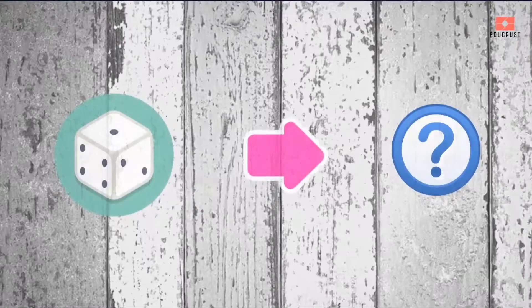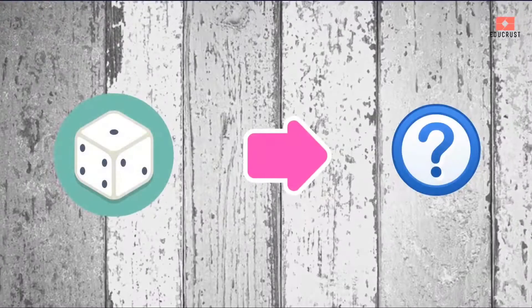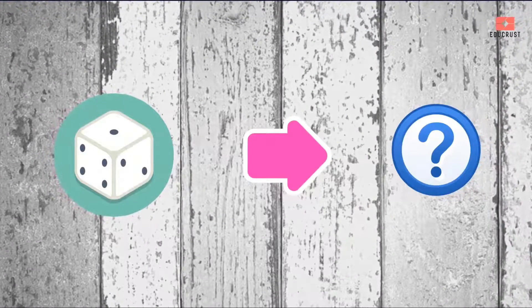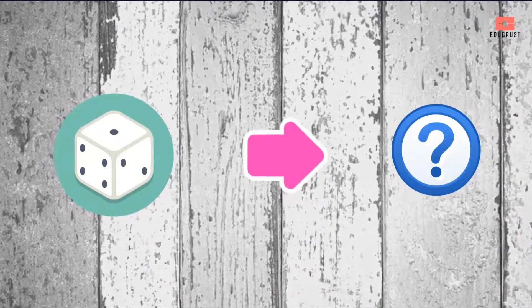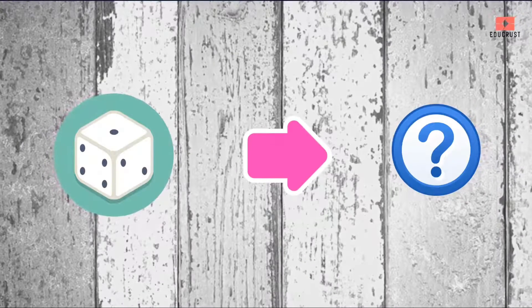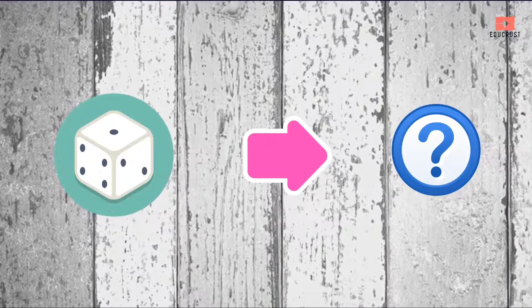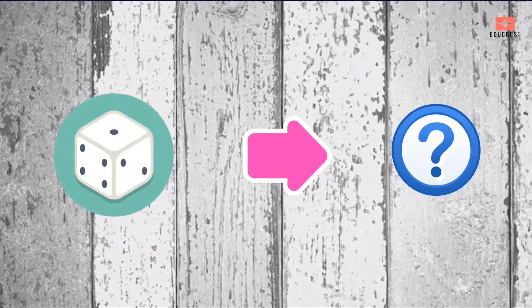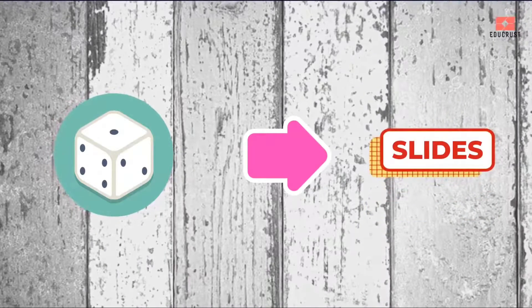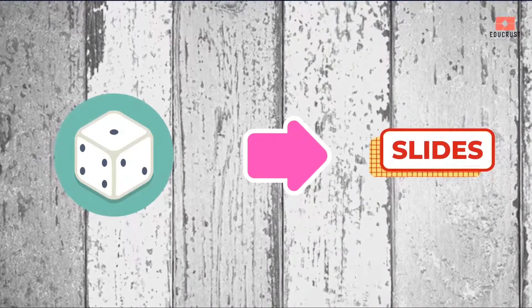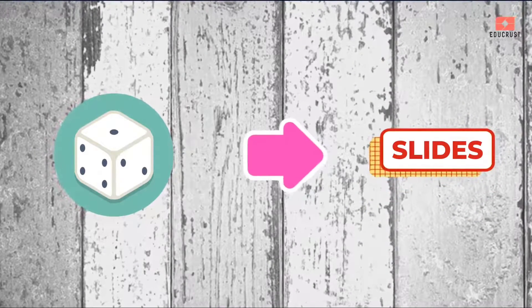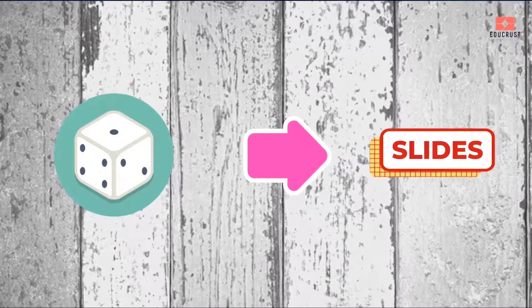Now, can you tell me what does a dice do — whether it slides or rolls? Yes, it slides. A dice slides because it has a flat surface.